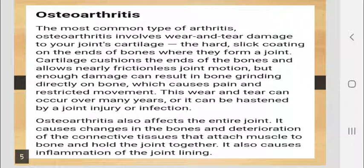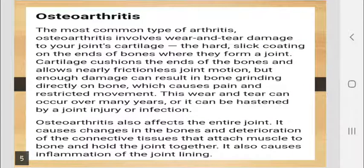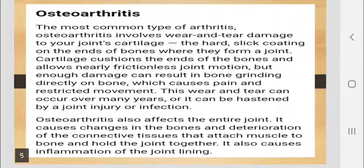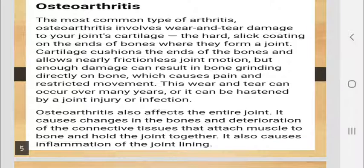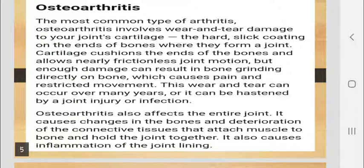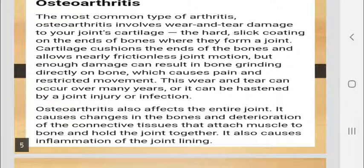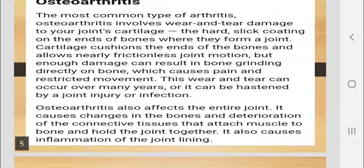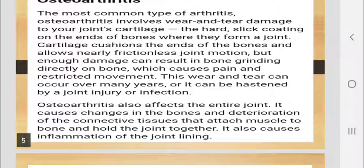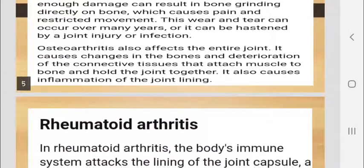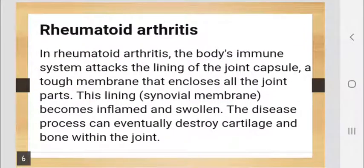When the cartilage is damaged, the bones start grinding against each other and get damaged, which also causes restriction in movement. This wear and tear can occur over many years, or it can be hastened by a joint injury or infection. Osteoarthritis also affects the entire joint — it causes changes in the bones and deterioration of the connective tissues that attach muscle to bones and hold the joint together. It also causes inflammation of the joint lining.